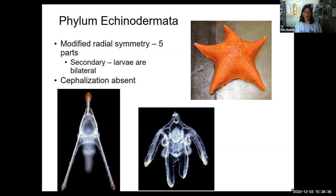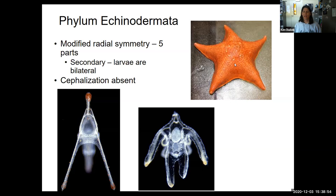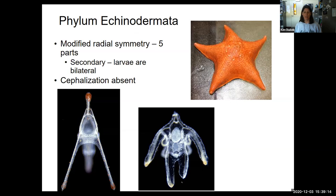Echinoderms — you might first look at them and say, wait, they're radially symmetrical. And they are as adults. Not only are they radially symmetrical, but they always have five parts or multiples of five. But this is a secondary body plan. Their larvae are actually bilateral. Molecular data shows that echinoderms evolved from a bilateral ancestor, and bilaterality is only retained in their larval stages. Then they move to a radially symmetrical body plan as adults.